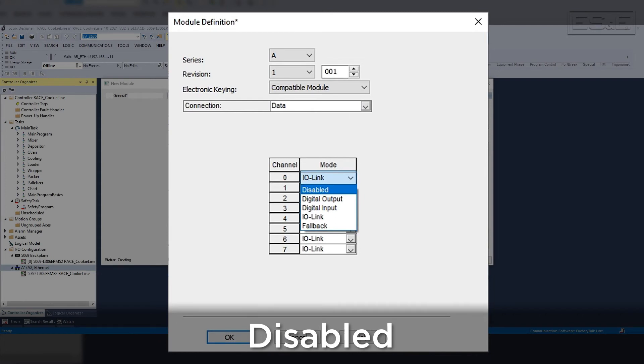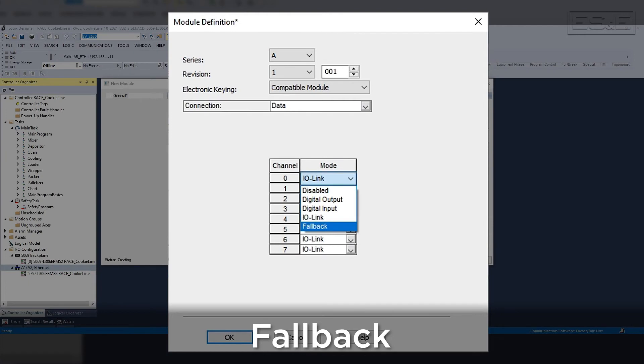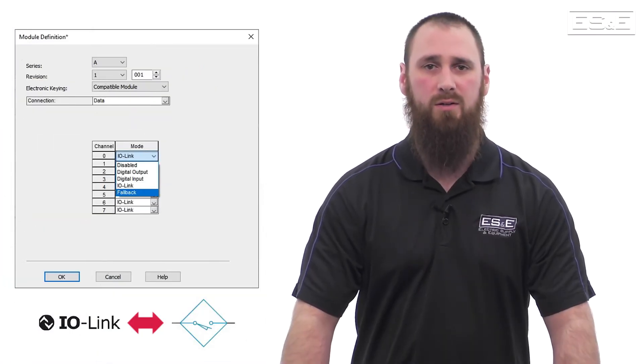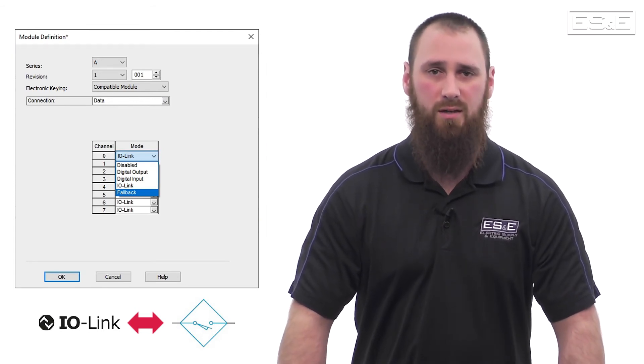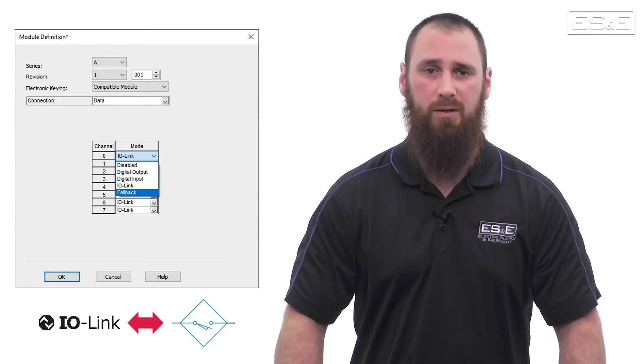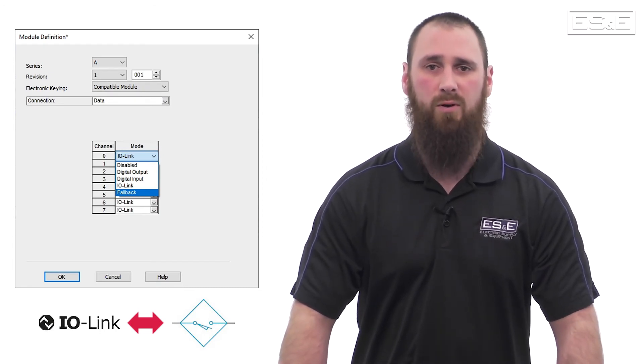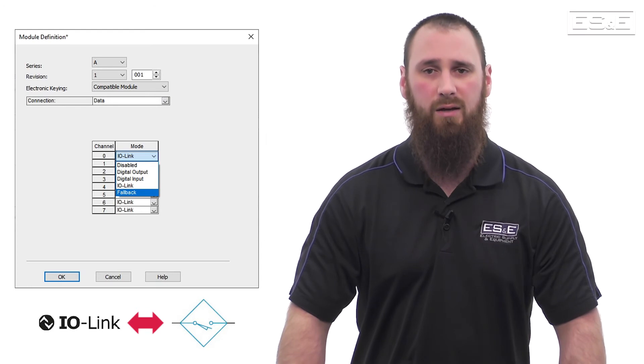The fifth and newest mode is called fallback. Fallback mode is a new feature released by Rockwell that allows the IO-Link Master to configure an IO-Link device, then instructs the device to behave like a standard digital input. This allows for increased response time on digital inputs while still having the ease of replacement IO-Link provides.